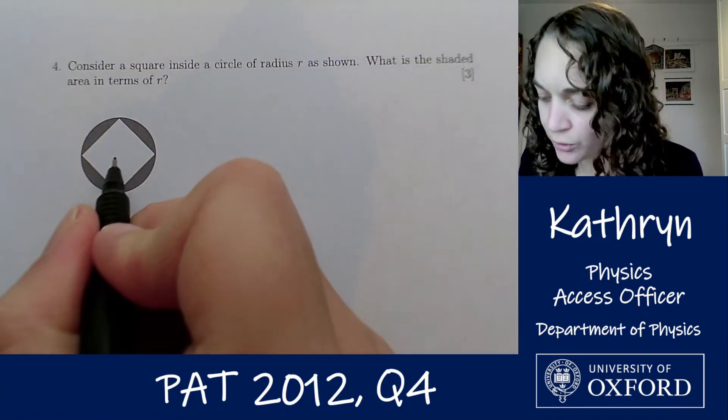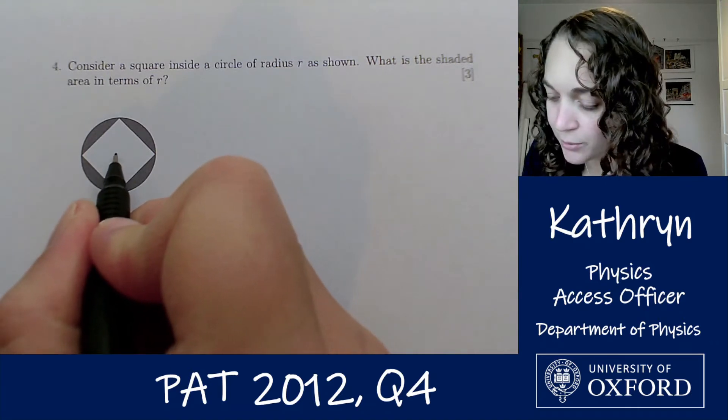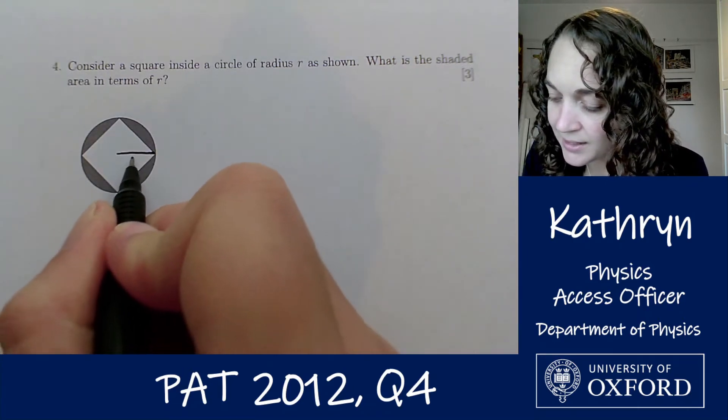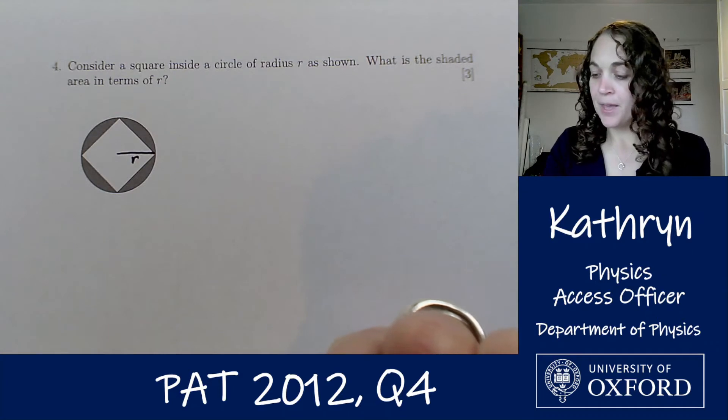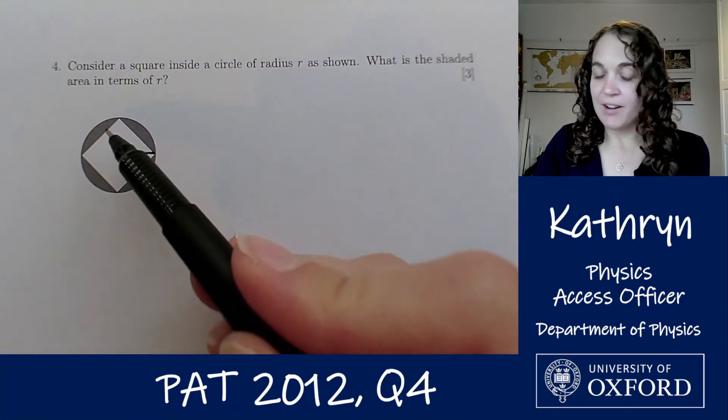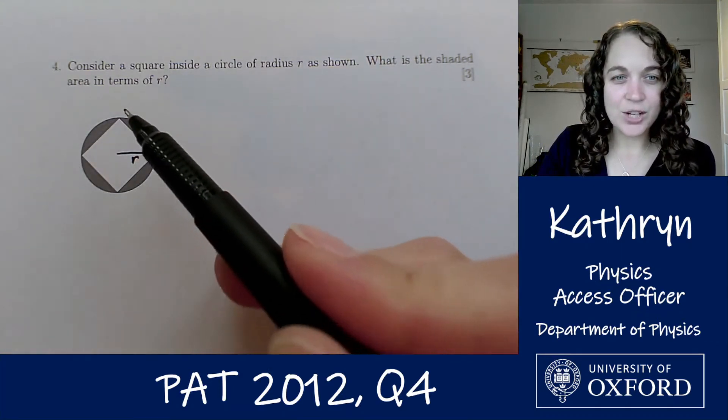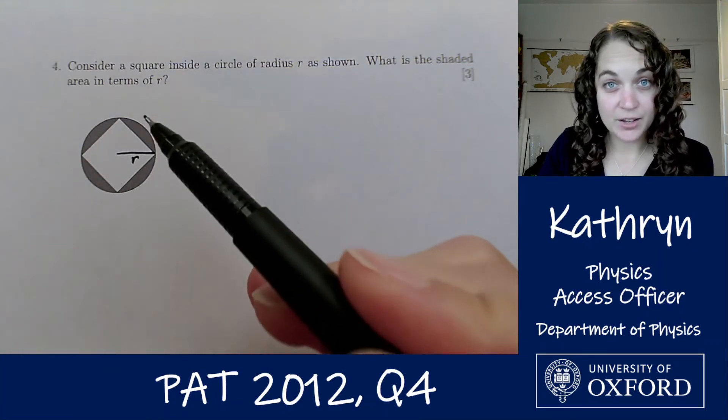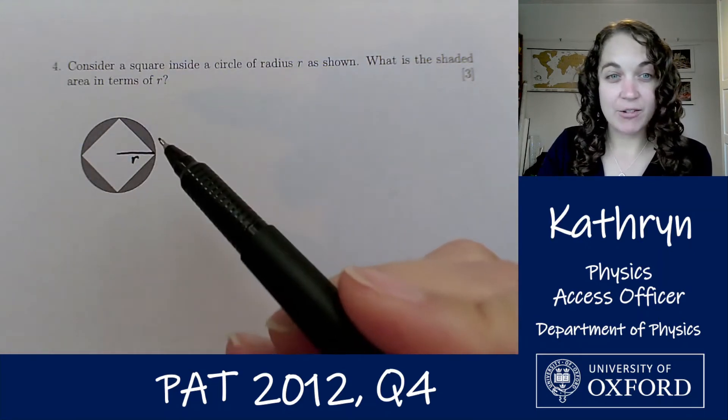Let's first of all mark r on this diagram so that we are super clear about what it is. We want this shaded area and the way we can find the shaded part is if we find the area of the circle and we subtract the area of the square.